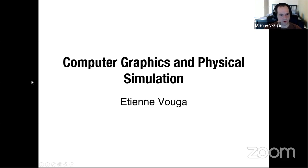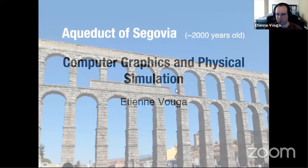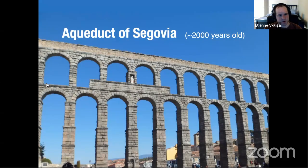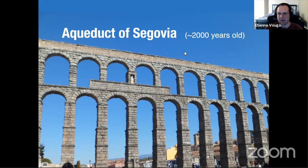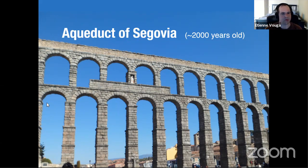I thought I'd start just by showing an example of the kind of thing that I do. Over here is the Aqueduct of Segovia. This was built by the Romans — it's standing in the middle of a town in Spain and has been standing there for about 2,000 years. It was done using ancient Roman masonry techniques: just a bunch of stones piled on top of each other with some mortar in between. There's no steel or anything inside the aqueduct.